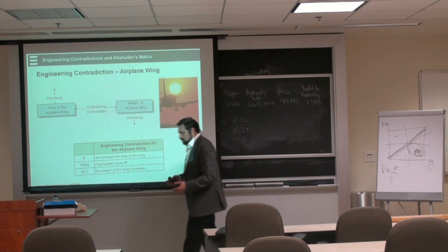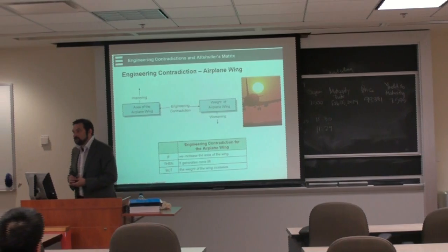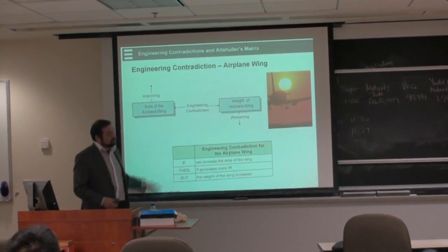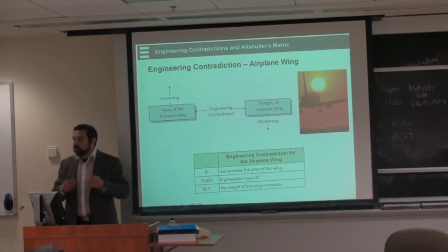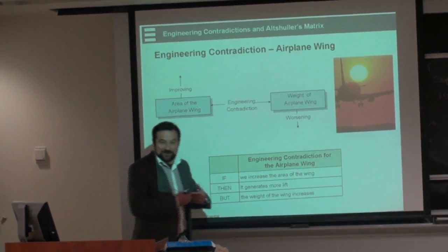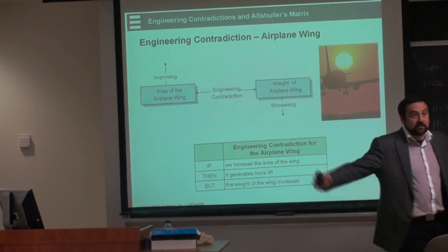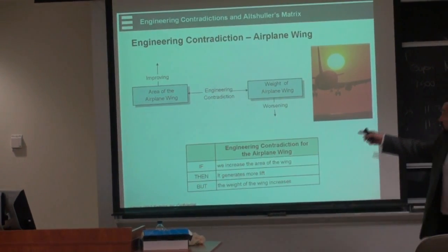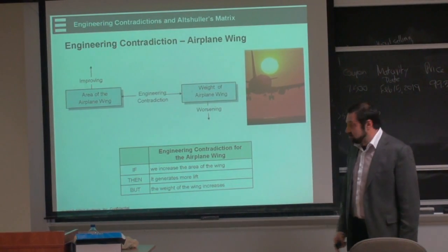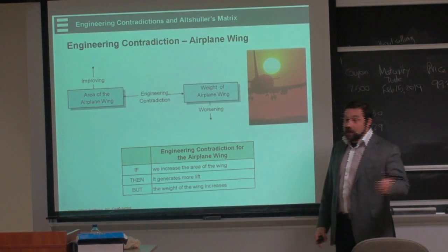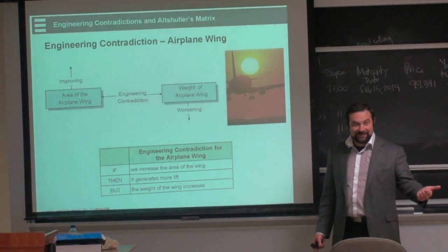Let's look at this real situation. If you have an airplane, as I said, and if you want to improve area of the wing, because if you have a bigger wing, you can put more passengers like myself on the plane and, you know, bring them from A to B. However, if you improve the area of the wing, it becomes heavier. Right? So, you formulate contradiction. If, then, then it's a good one.